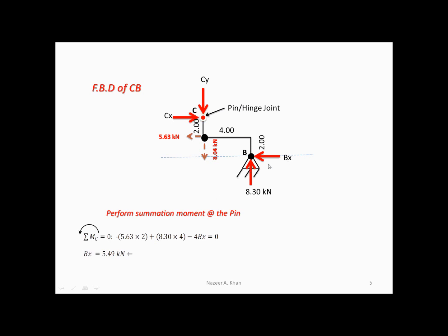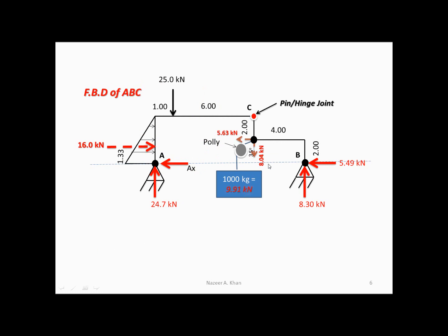Once we have BX, we can go back to the original structure. We've used summation of moments and summation of forces in the y direction for the entire structure. The only one we haven't used is summation of forces in the x direction. Now, placing 5.49 for BX, I only have one unknown in the horizontal direction, and I can solve that with the one remaining equation. Summation of forces in the x direction is equal to zero.